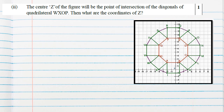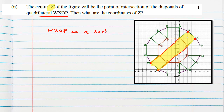Question 2, for one mark: the center Z of the figure will be the point of intersection of diagonals of quadrilateral WXOP. Here is W, here is X, O is here and P is here. If we join them, this is the quadrilateral, and the point where the diagonals intersect we name as Z. This quadrilateral is a rectangle.